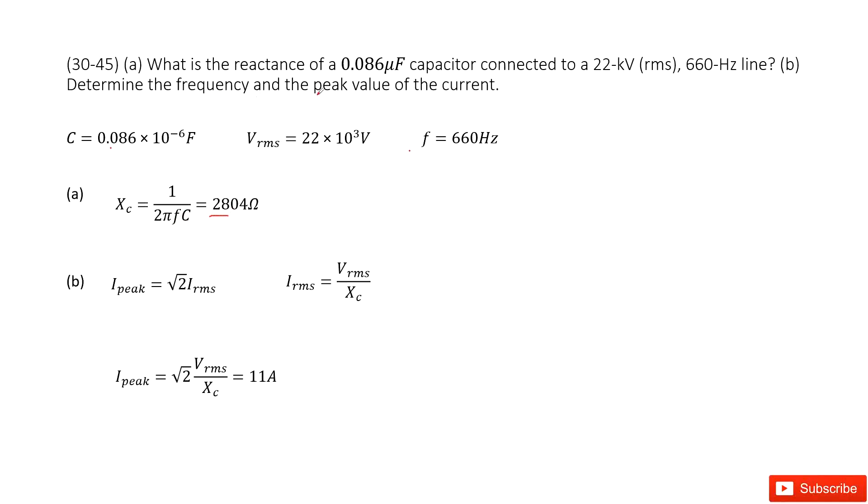The second part asks to determine the peak value of the current. Now we need the peak current, but what's given is the RMS voltage. So we need to convert RMS current to peak current. From the chapter, we know that the peak current is √2 times I_RMS.